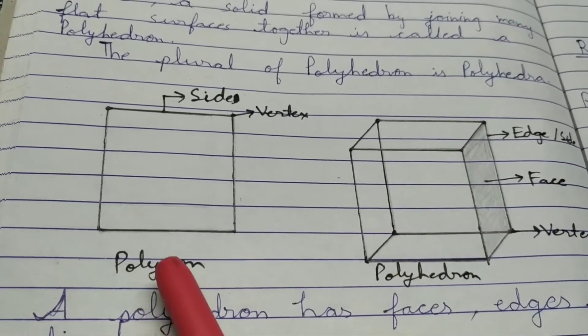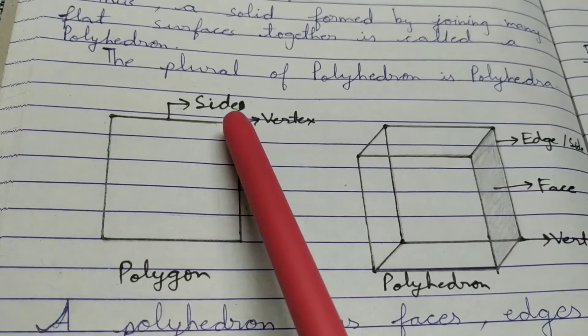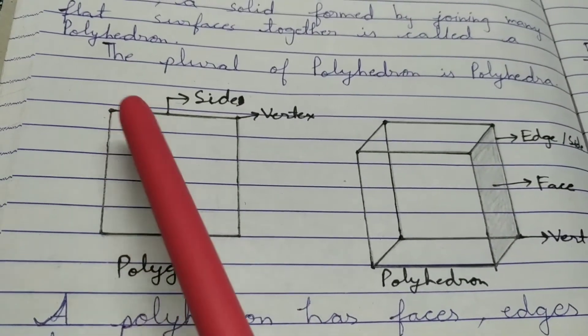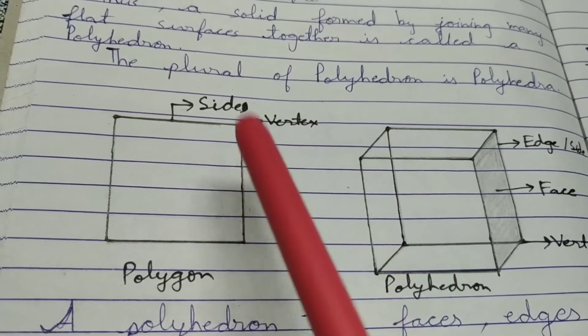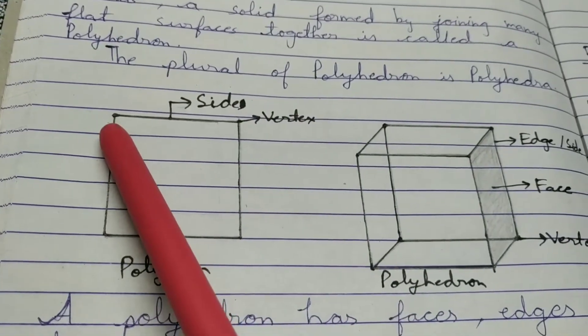A polygon is made up of line segments, and these line segments are called sides. The point where two sides meet is called a vertex — all such points are vertices.